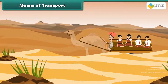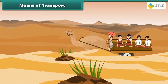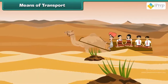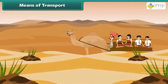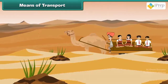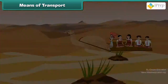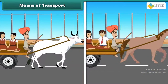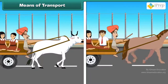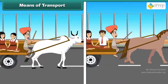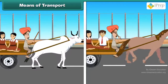In hot deserts like Rajasthan, children use camel carts to reach school. Camel has thin long legs and can walk on hot sand. In plains such as Uttar Pradesh, children in villages use bullock cart and horse cart or tonga to reach school.